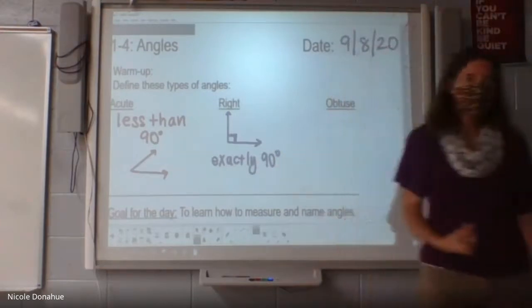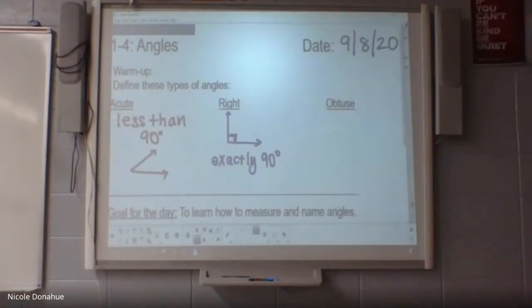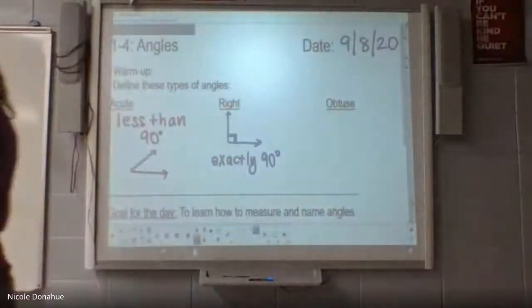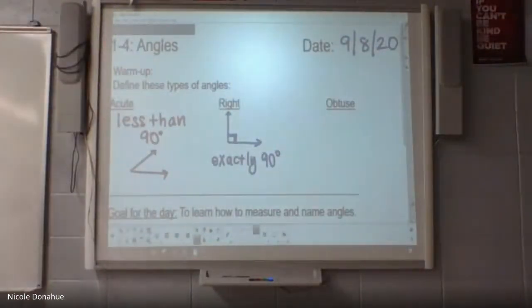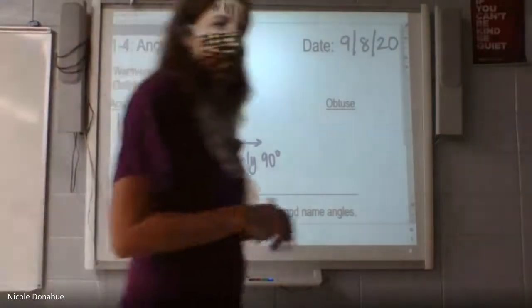It needs to be exactly 90 degrees. If someone had tried to put these tiles on the floor and they weren't exactly 90-degree angles, the tiles would look pretty wonky and maybe wouldn't even fit together — there'd be lots of gaps. So it's a big deal for it to be a perfect 90-degree angle, exactly 90 degrees.